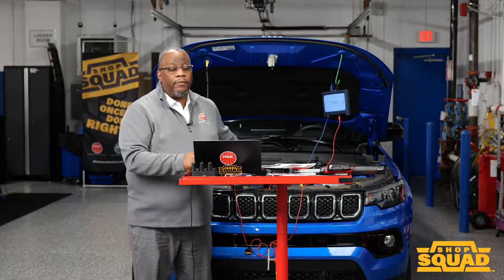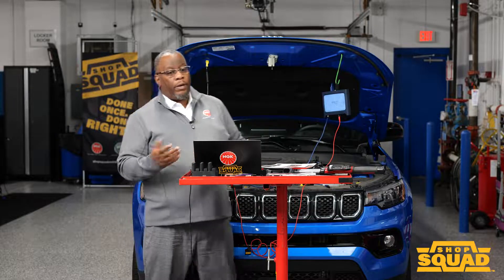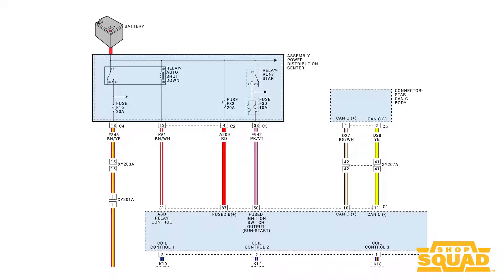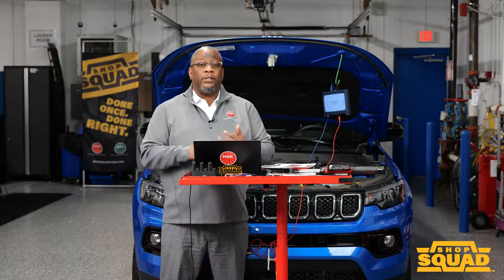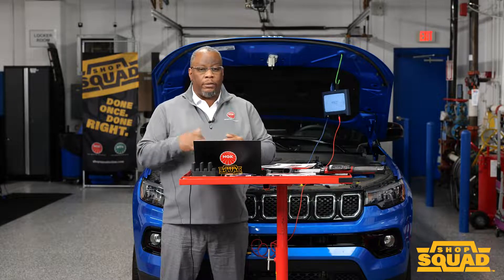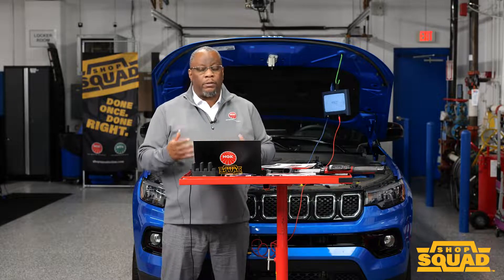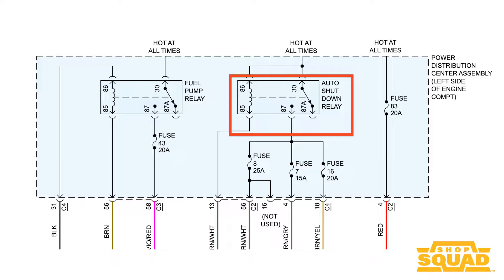What is the ASD relay system? It's the way in which the engine management system controls 12-volt output power to major components such as the ignition coils, the injectors, and other components deemed necessary that should have 12 volts once the PCM decides it's necessary.